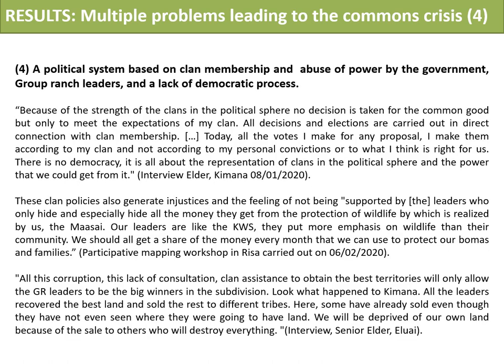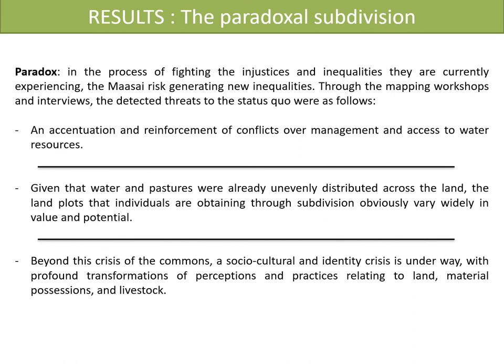However, most of the Maasai interviewed have a convergent feeling. There is another direct cause leading to the crisis of the commons related to a political system increasingly based on clan membership and on the grabbing of certain lands by certain political leaders for their personal good. I quote: 'Because of the strength of the clan in the political sphere, no decision is taken for common good, but only to meet the exploitation of my clan.' I quote again: 'All this corruption, dislike of consultation, clan assistance to obtain the best territories will only allow the group ranch leaders to be the big winner in the subdivision.' Thus, it would be by recovering 23 acres of land equally that the members could obtain profit, before the group ranch leaders had eaten everything or sold it to the highest bidder.